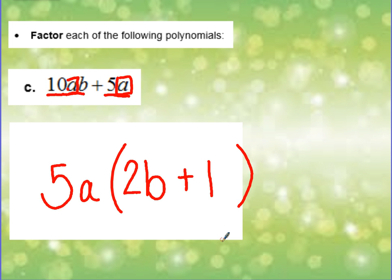Remember, this is really a fancy way of thinking of backwards distributing. If we were to distribute this 5a to the 2b and positive 1, we should always get back our original polynomial, and that is how you can check your work going forward. At this time, please write down any questions you may have or any comments for the beginning of class tomorrow. And thank you so much for watching.